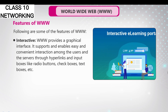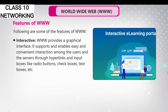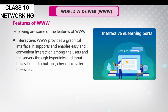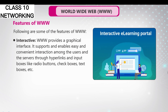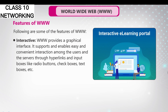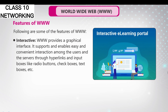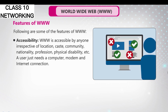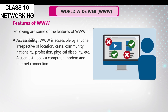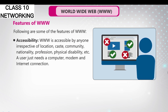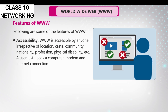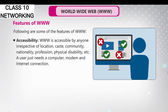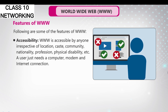Interactive: WWW provides a graphical interface. It supports and enables easy and convenient interaction among the users and the servers through hyperlinks and input boxes like radio buttons, checkboxes, text boxes, etc. Accessibility: WWW is accessible by anyone, irrespective of location, caste, community, nationality, profession, physical disability, etc. A user just needs a computer, modem, and internet connection.